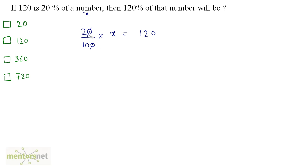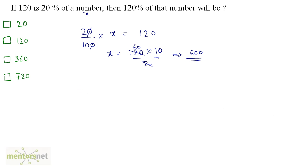Therefore x is equal to 120 times 10 by 2, and 120 by 2 gives you 60, so x is equal to 600. Now we have been asked 120% of this number, so 120% of x equals 120 upon 100 times 600, and cancelling the zeros we get 120 times 6, which is 720. So the answer is option D.